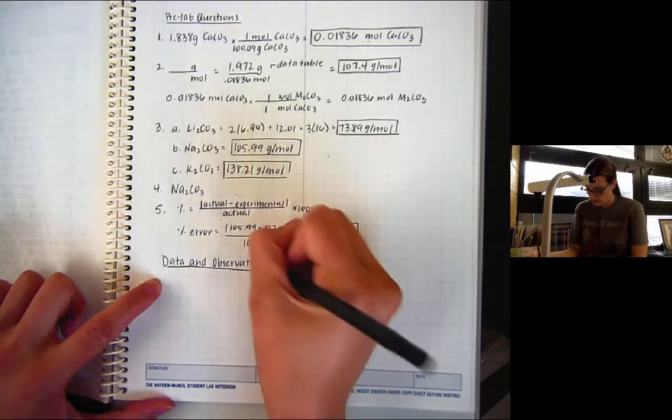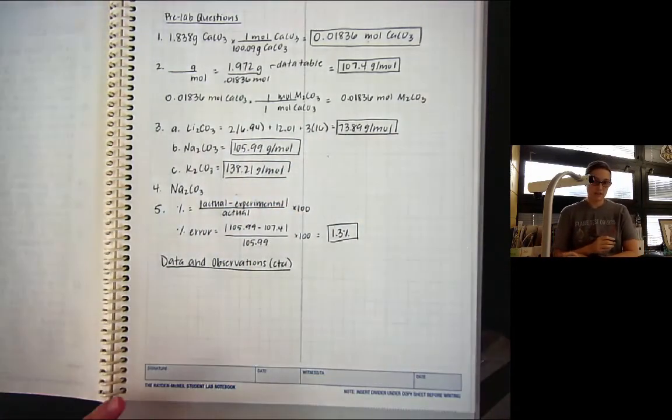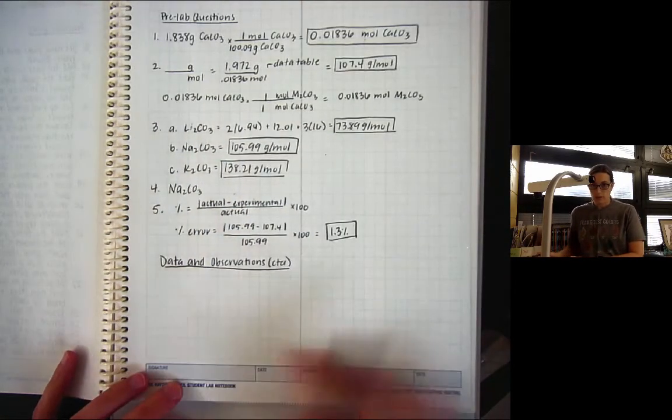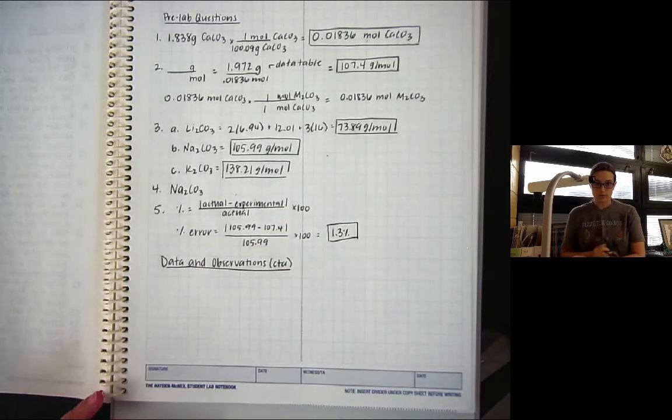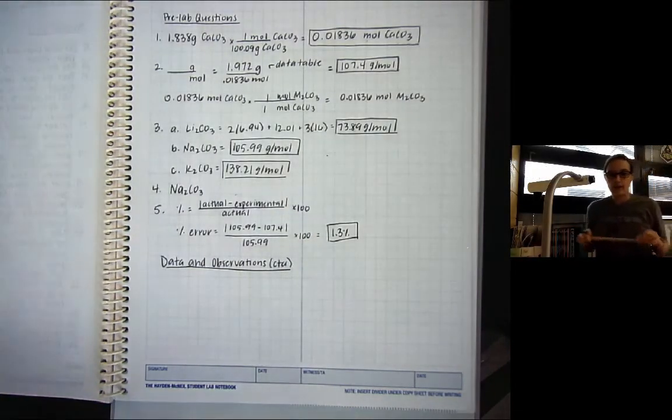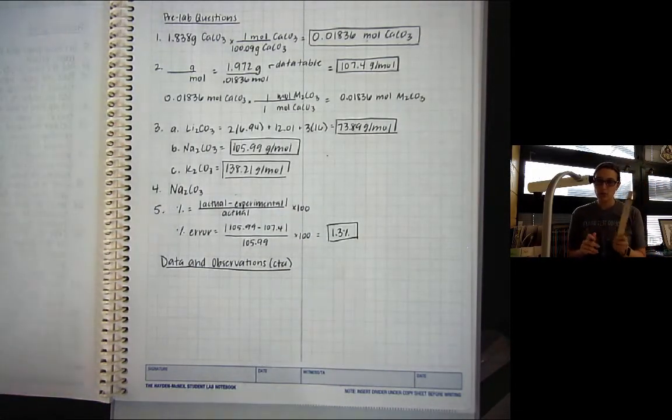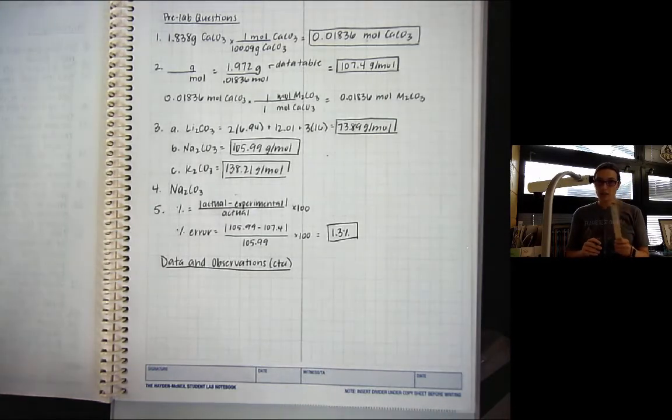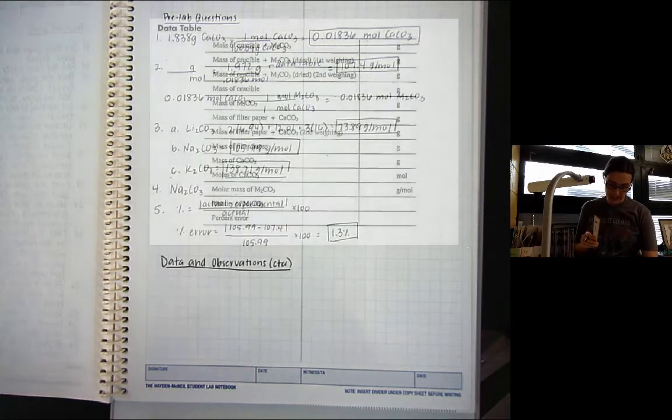And I'm just going to put continued. So, I'm going to continue my data and observations. Here is where I'm going to put my data table. Now, when you draw a data table, you need a ruler or a straight edge. You need something to make your lines straight.